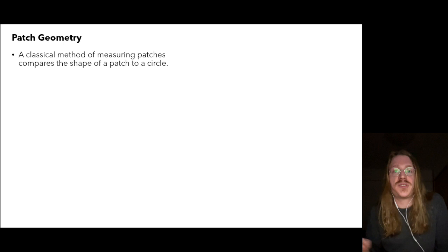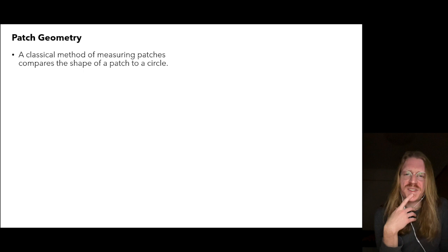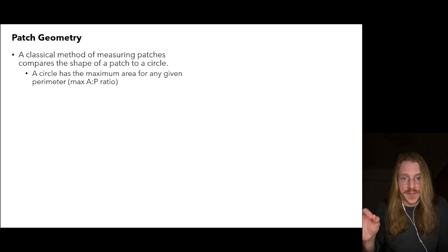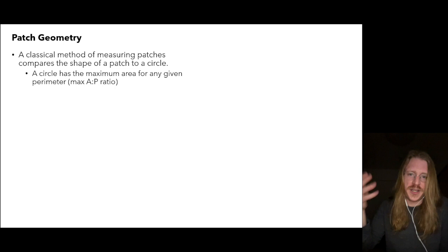A classical method of measuring patches compares the shape of a patch to a circle. Why a circle? A circle has the maximum area for any given perimeter. If we maximize our area-to-perimeter ratio, we can minimize edge effects, which protects the integrity of the focal habitat. We'll talk about the applications to conservation in a different video.